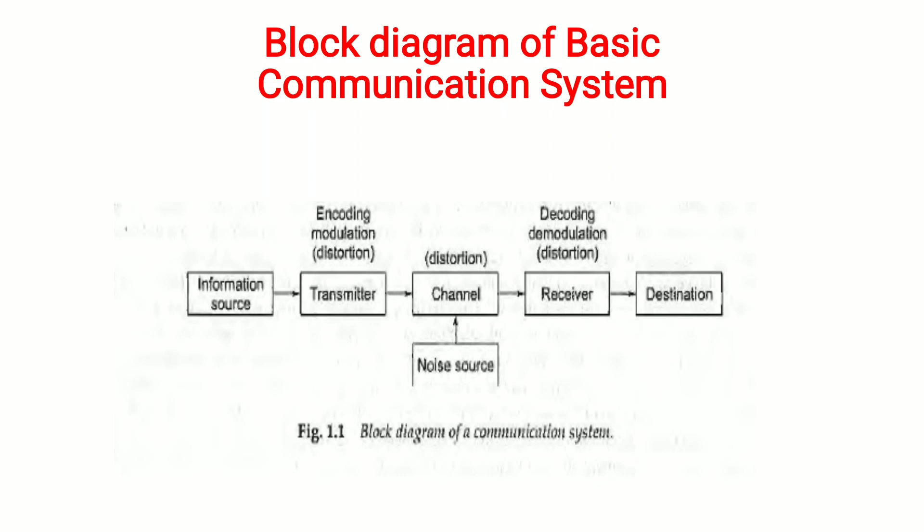The transmitter modulates the signal — it modulates the amplitude, frequency, or phase of the message signal depending on the requirement. The modulated signal is then given to the channel. The next block is the channel, which is a physical medium that connects the transmitter with the receiver.